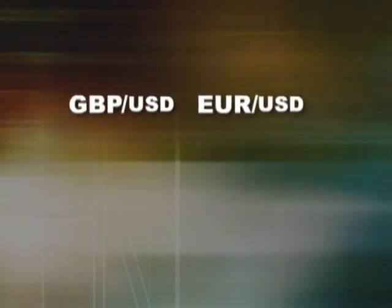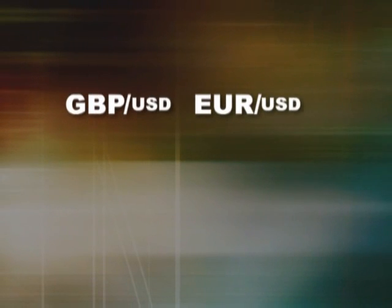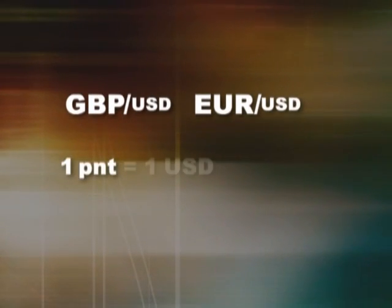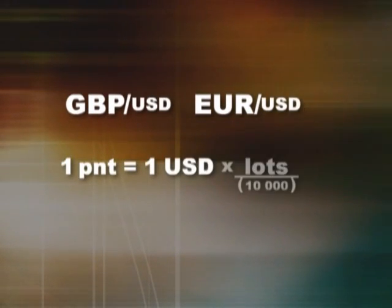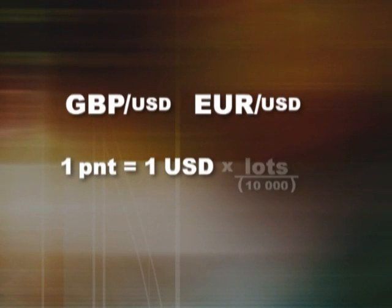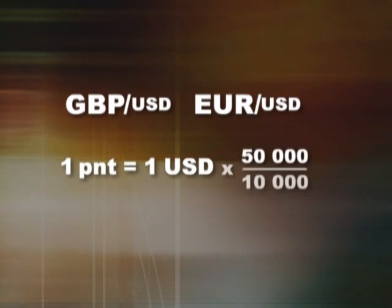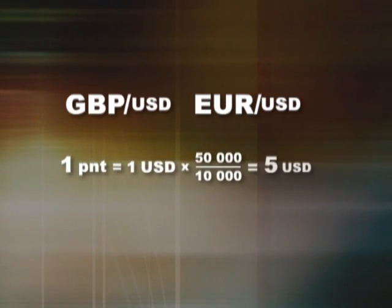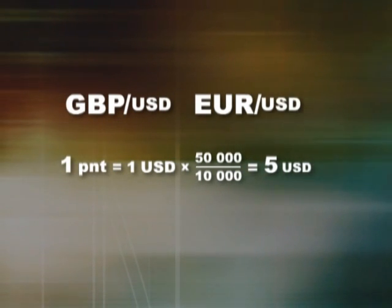It's very simple to calculate the income from your deal. All you need to know are the number of points you've earned or lost. When US dollars are not the base currency, a point equals one dollar for every lot of ten thousand. So if you've bought fifty thousand, it's five dollars a point.